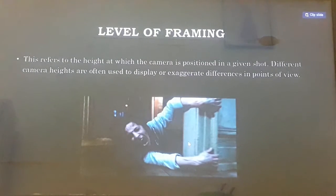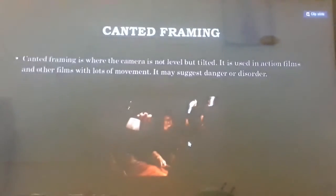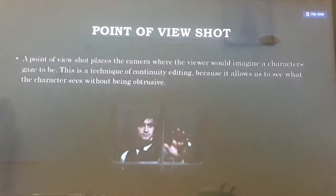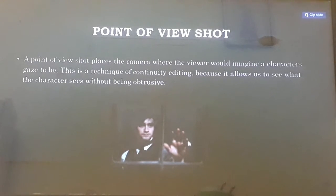Next is level of framing. This refers to the height at which the camera is positioned in a given shot. Different camera heights are often used to display or exaggerate differences in point of view. Next is candid framing. Then, point of view shot. A point of view shot places the camera where the viewer would imagine a character's gaze to be. This is a technique of continuity editing because it allows us to see what the character sees without being abrasive.